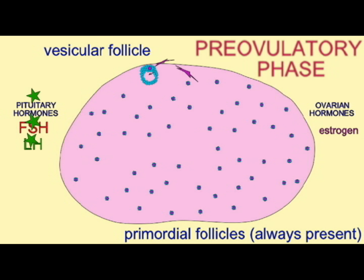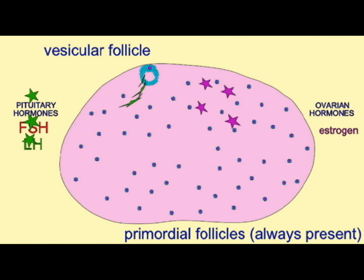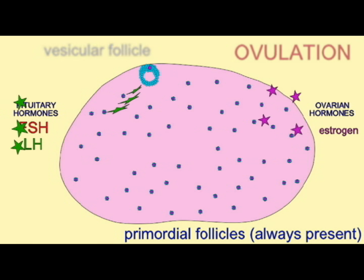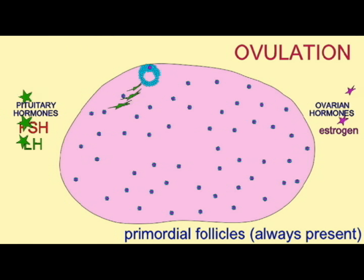Just prior to ovulation, there is a 24 to 36-hour surge in the production of LH, which is the trigger for ovulation.